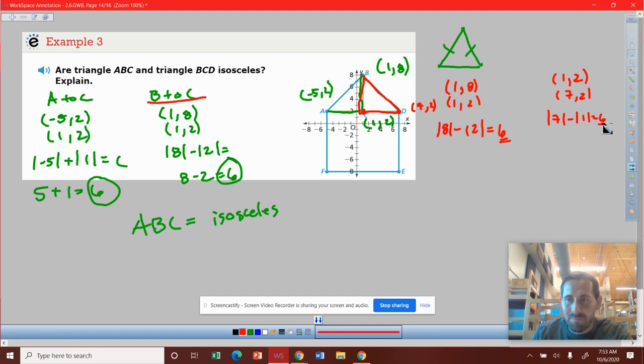So this one is isosceles as well, so we could say B, C, D is isosceles.